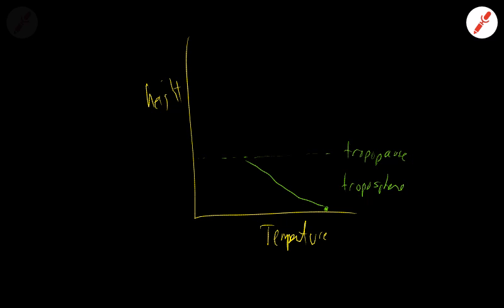At the tropopause, the temperature doesn't get colder anymore. It stays the same, it might warm up a little bit, and then it warms up with height. This area is what's called the stratosphere.